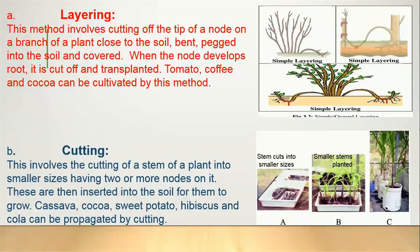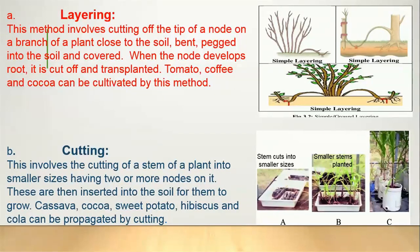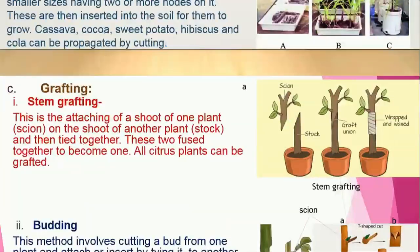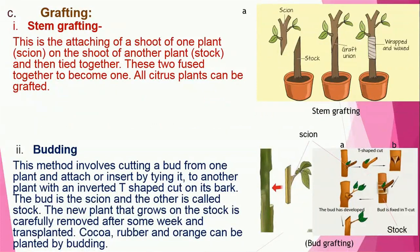The second method is the cutting method. This involves cutting a long stem of a plant into smaller sizes, where each piece must have two or more nodes on it. These pieces are then planted into the soil, and after some time new offspring are formed — so one long stem can yield five or six new plants. Cassava, cocoa, sweet potato, hibiscus, and kola can be propagated by the cutting method.